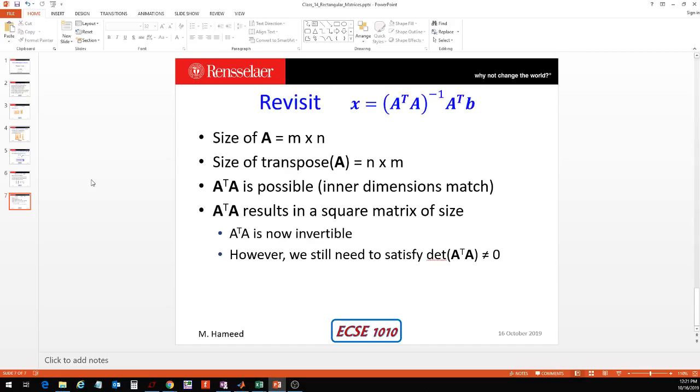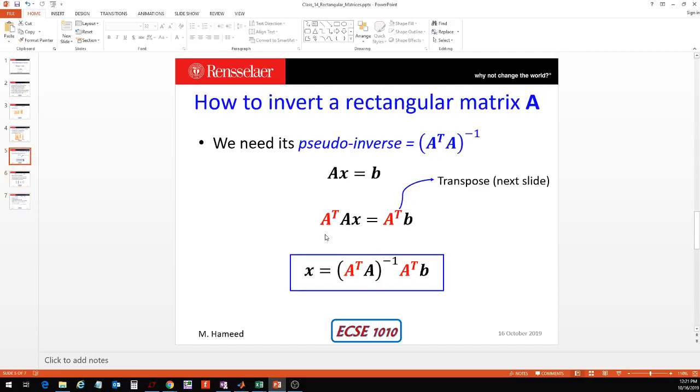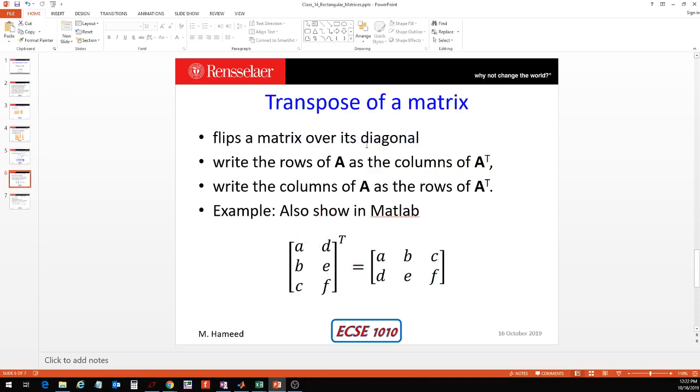Going back, here we've got the solution for X. Find the pseudo-inverse, which is A transpose multiplied by A, invert that matrix, and then multiply it with A transpose B to find the unknowns. We talked about the pseudo-inverse and saw an example here as well as in MATLAB.